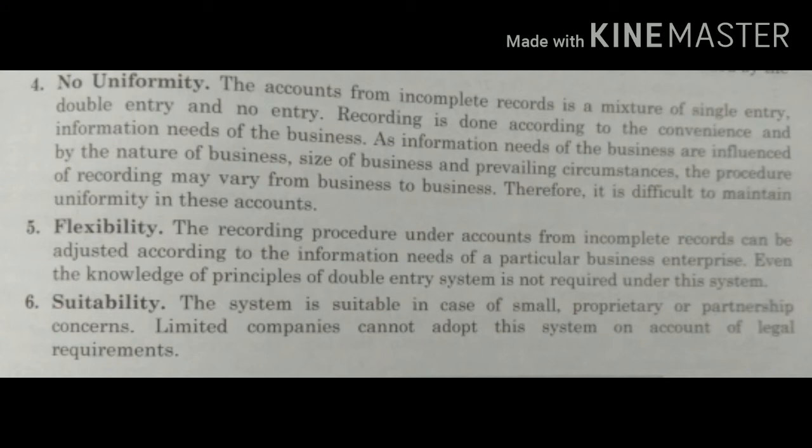Fourth feature is non-uniformity। Single entry system में हम double entry वाले बहुत कम rules regulation को follow करते हैं। हम अपनी convenience के accordingly transactions note करते हैं — जो information मिली और जो record करना चाहते हैं वो कर देते हैं, जिसको छोड़ना चाहते हैं उसको ignore कर देते हैं। तो इसमें कोई uniformity नहीं है कि हर बार same procedure use करके accounts बनाएंगे — हम अपनी जरूरत के according information को shuffle कर सकते हैं।